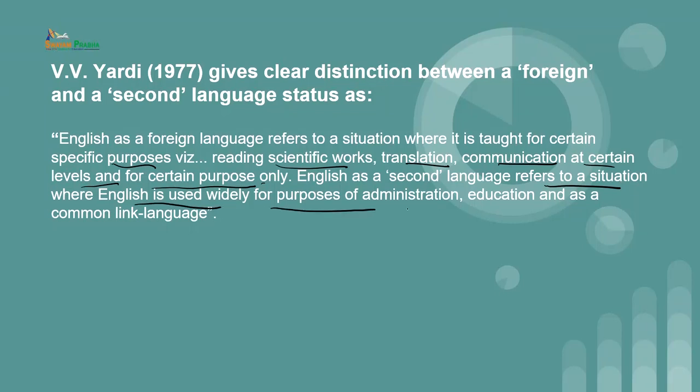However, the use of English language is quite clear. English can be considered a foreign language if it is used for specific purposes like scientific works, translating from one language to another, or communication at a certain platform for specific purposes. However, English as a second language is quite different — it refers to a situation where English is used widely for the purposes of administration, education and common link language. In India, in my opinion, English is considered a second language.